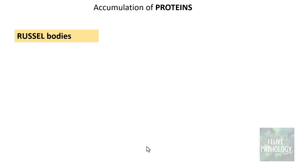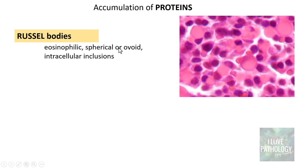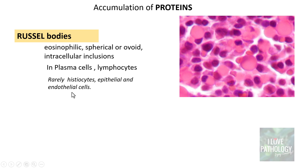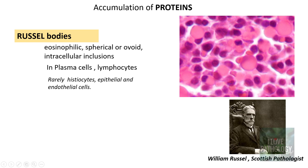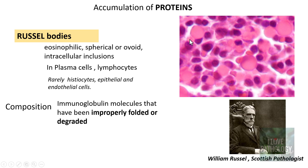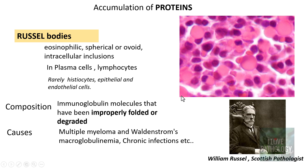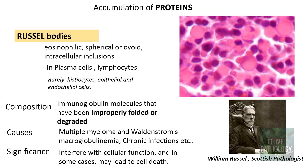The second example is Russell bodies. These are eosinophilic, spherical or ovoid intracellular inclusions most commonly seen in plasma cells, but also in lymphocytes and rarely in histiocytes, epithelial, and endothelial cells. Named after Scottish pathologist William Russell, they are composed of improperly folded or degraded immunoglobulin molecules. Conditions associated include multiple myeloma, Waldenström's macroglobulinemia, and chronic infections with abundant plasma cells and lymphocytes. They interfere with cellular function and in some cases may lead to cell death.